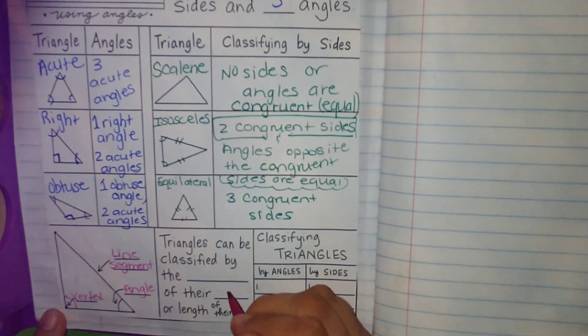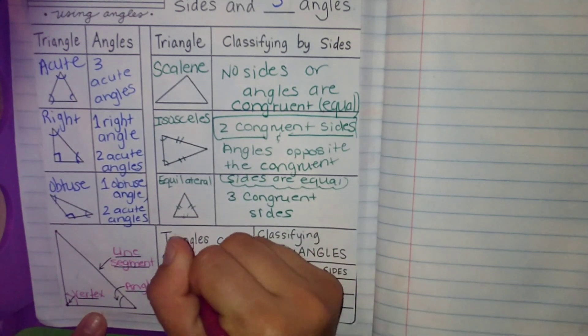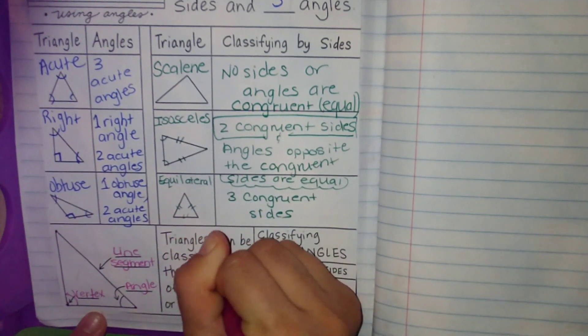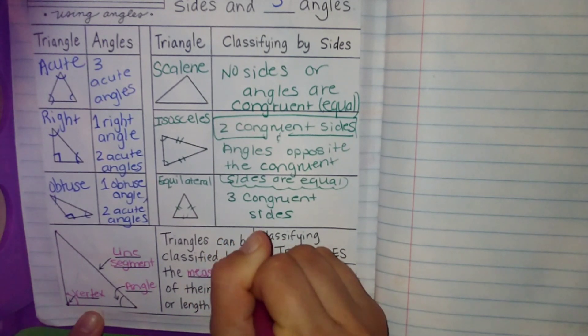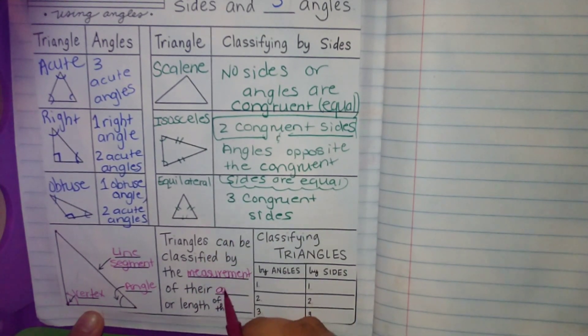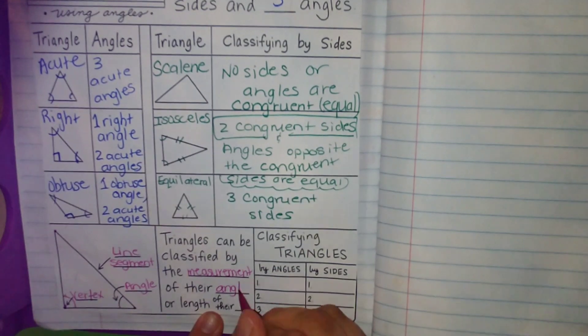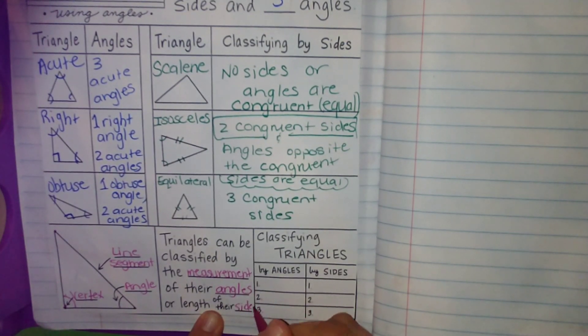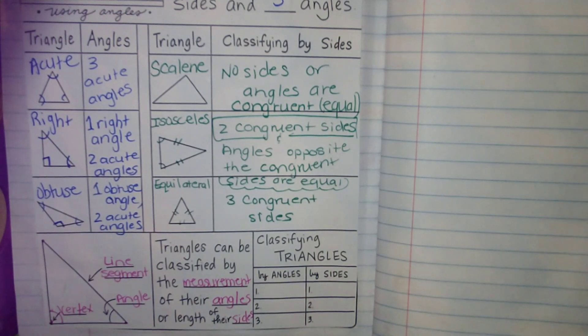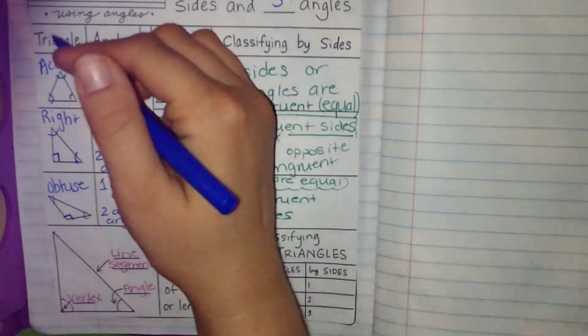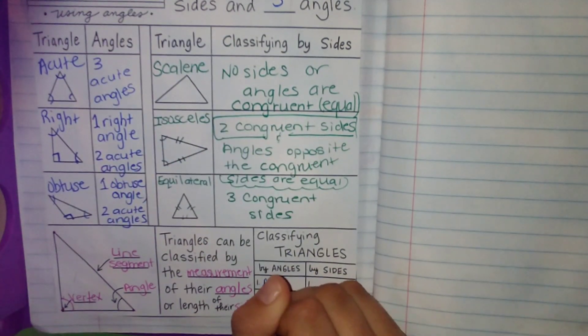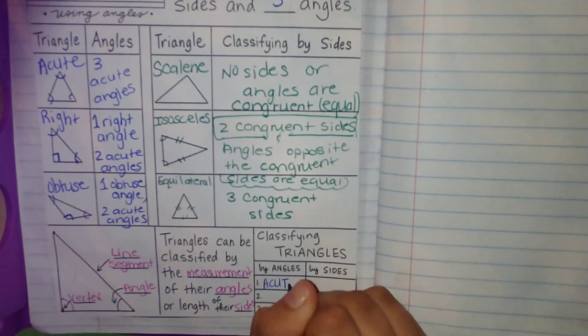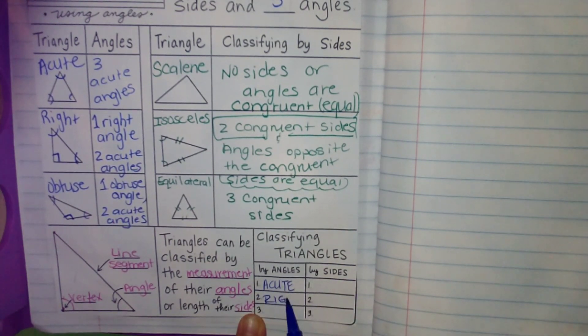So we can classify triangles by the measurement of their angles or the length of their sides. Now I'm going to get my colors that match. They can either be acute, right, or obtuse.